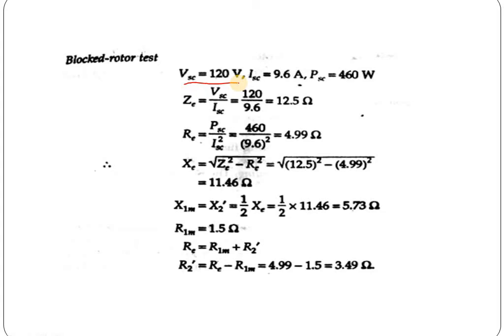From the voltmeter reading and ammeter reading, by using Ohm's law, we can get the value of equivalent circuit impedance ZE, which is VSC divided by ISC. We are getting the equivalent impedance value as 12.5 ohm. Now, equivalent resistance can be calculated using the formula P equals I squared R. From there, RE equals PSC divided by ISC squared.